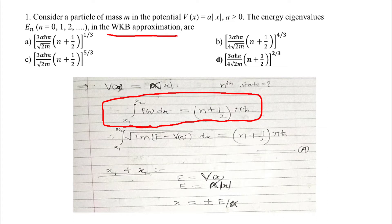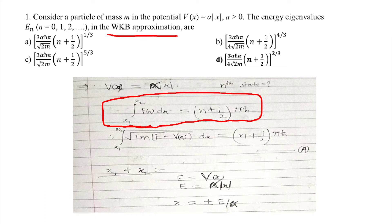Whenever you start a WKB question, first write this formula. The question will mention WKB approximation directly. So the formula is: ∫(x1 to x2) p(x) dx = (n + 1/2)πℏ. Now we need to find x1 and x2 — the classical turning points — from V(x). Set E = V(x): E = α|x|, so x = ±E/α. Since |x| covers both intervals, x1 = −E/α and x2 = +E/α.